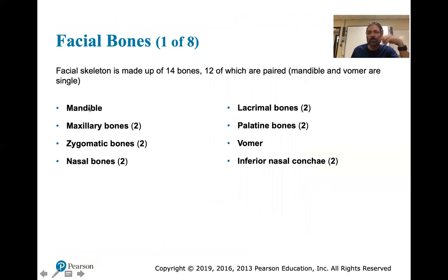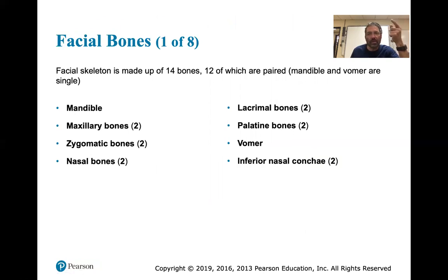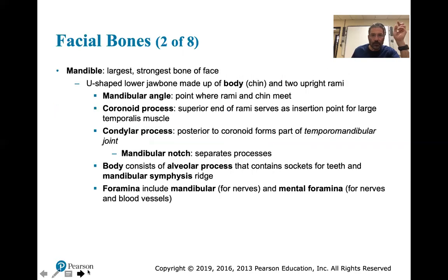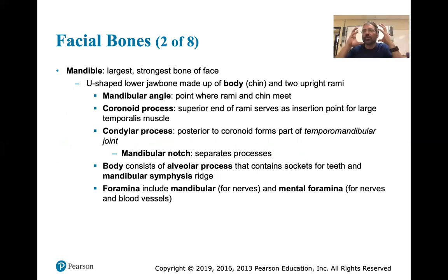The facial bones include the mandible, maxillary bone, zygomatic bones, nasal bone, lacrimal bone, palatine bones, vomer (the center part of the nose), and the inferior nasal conchae - two of those. The mandible is the strongest bone of the face. If you don't believe that, think of someone having a seizure with lockjaw - those muscles contract so hard they can fracture the mandible and crack the teeth.